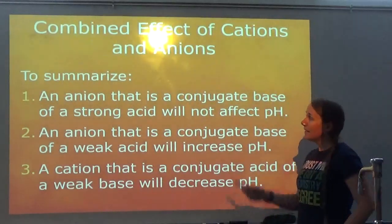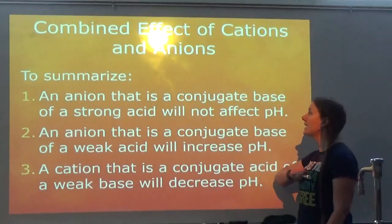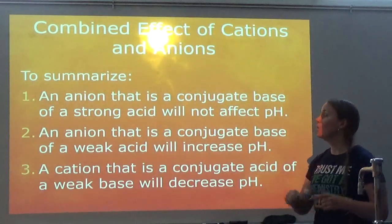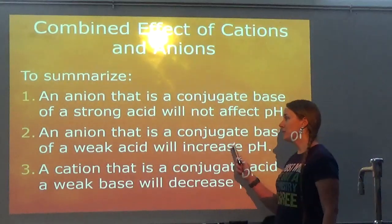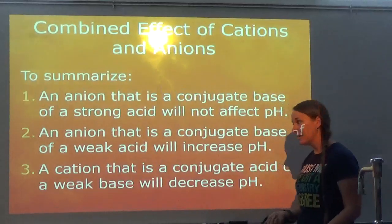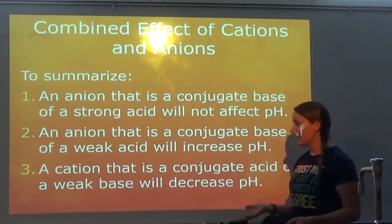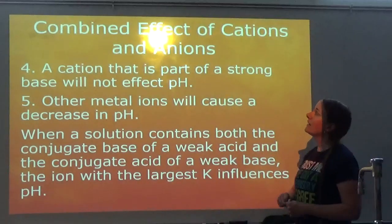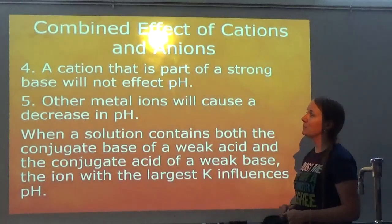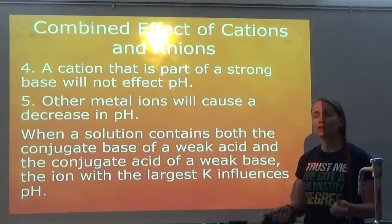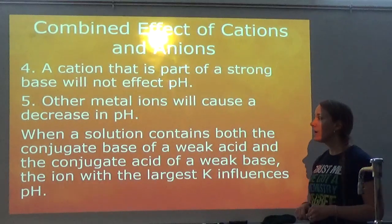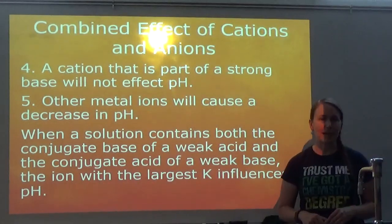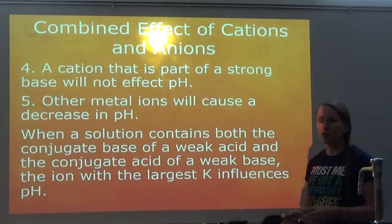To summarize: an anion that is the conjugate base of a strong acid does not affect pH. An anion that is the conjugate base of a weak acid will increase the pH — it's going to make the solution basic. A cation that is the conjugate acid of a weak base will decrease the pH, because an acid decreases pH. A cation that is part of a strong base will not affect the pH. Other metal ions will cause a decrease in pH. When a solution contains both the conjugate base of a weak acid and the conjugate acid of a weak base, the ion with the largest K influences the pH.